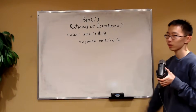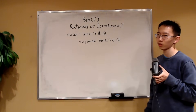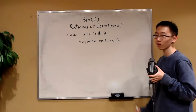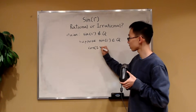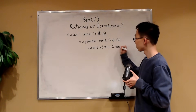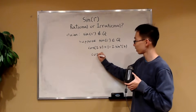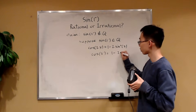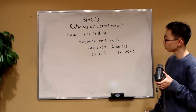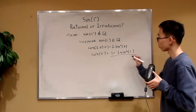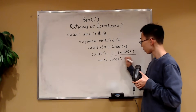Then what can we derive from this? When you're at this stage, it's usually a good idea to just play around with certain values. Consider the cosine double angle formula: cosine of 2x equals 1 minus 2 sine squared of x. If you plug in x equals one degree, you get cosine of 2 degrees equals 1 minus 2 sine squared of one degree. Because sine of one degree is rational, this entire expression is rational.